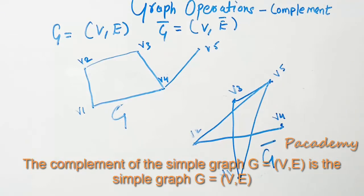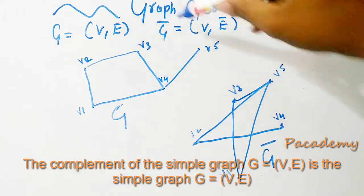This video is about some simple operations on graphs. The first kind of operation is a complement of a graph. There is a graph with V vertices and E edges.